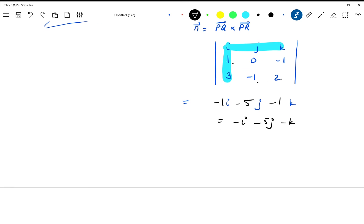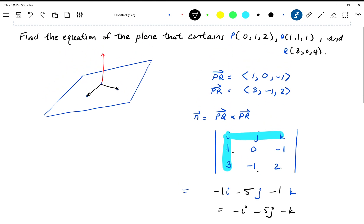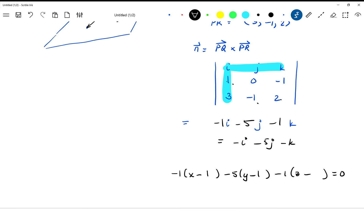So at this point, what we know is, we know the equation of the plane is found by taking negative one times x minus something, minus five times y minus something, minus one times z minus something, and that's equal to zero. So since the plane passes through all three of these points, it doesn't matter which point I pick. So I'm going to pick the easiest point, probably the one, one, one, maybe. And maybe your version of easier is different than mine.